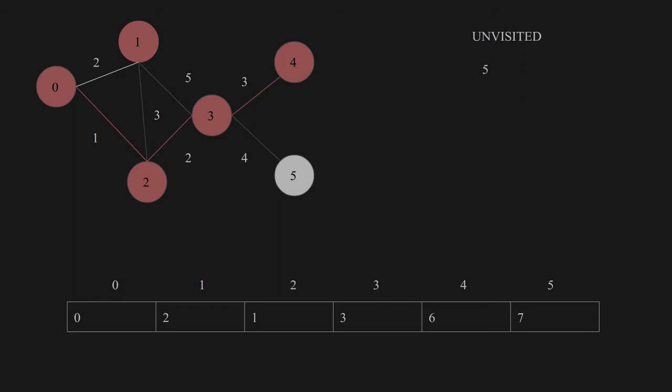Then we visit house 4 because it has the smallest distance among the unvisited ones, and it has no neighboring houses, so nothing to do here. Finally we visit house 5 — there is nothing to do here either, and the algorithm finishes. In our table we now have the list of shortest distances from house 0 to every other house: house 0 = 0, house 1 = 2, house 2 = 1, and so on.